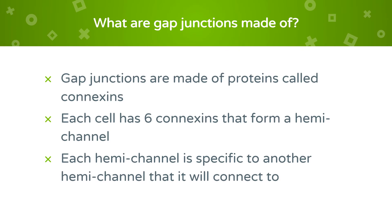Gap junctions are made of a category of proteins called connexins. In the previous example, these connexins would be the steel rods that make up the bridge. Each cell has six connexins that make up a hemichannel, which is the half of the bridge that each city built. Each hemichannel is specific to another hemichannel that it will connect to.